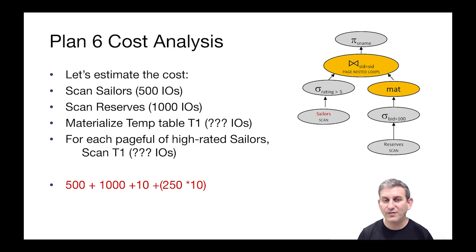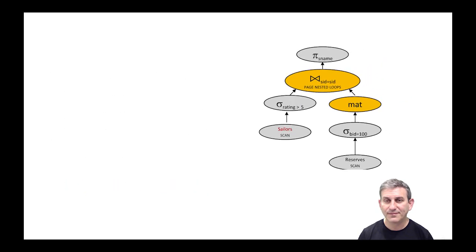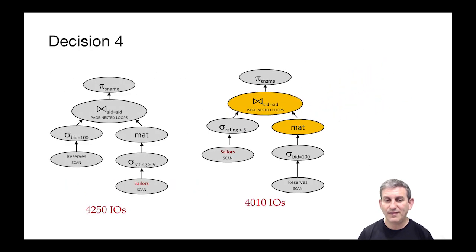This is 500 to scan Sailors, 1,000 to scan Reserves, 10 to write the materialization, and then 250 times 10 to do the looping of the outer over the materialized inner. Add that all up: cost is 4,010 IOs. It's even a little bit cheaper than the other join order.